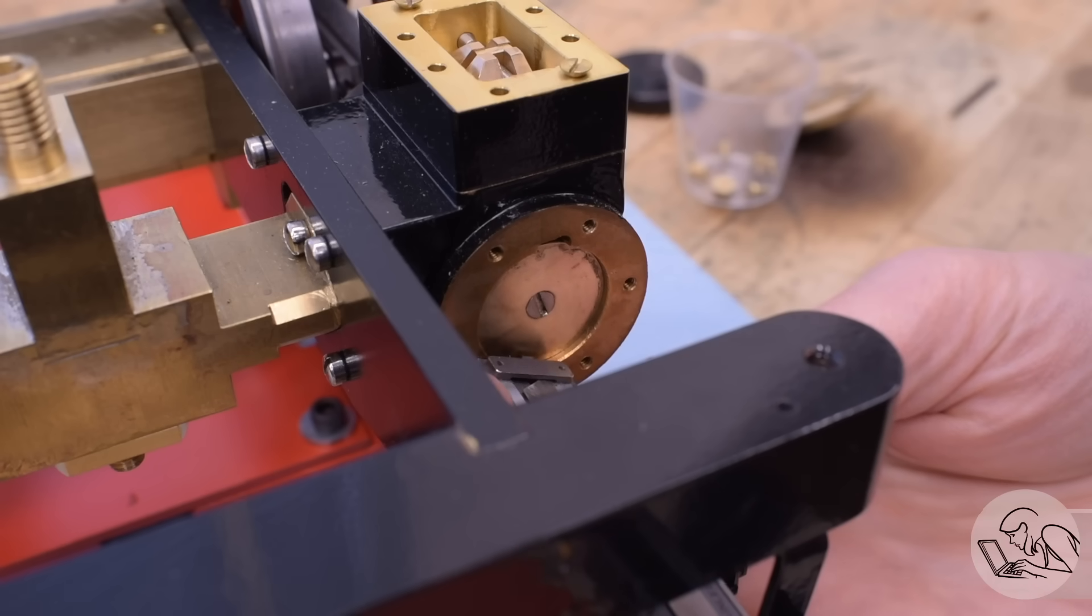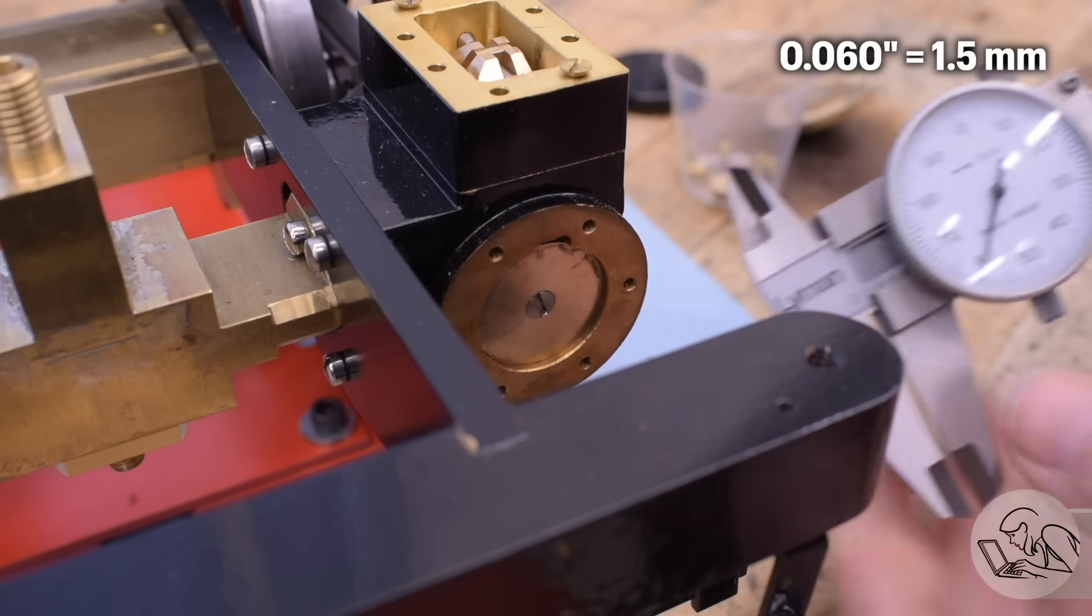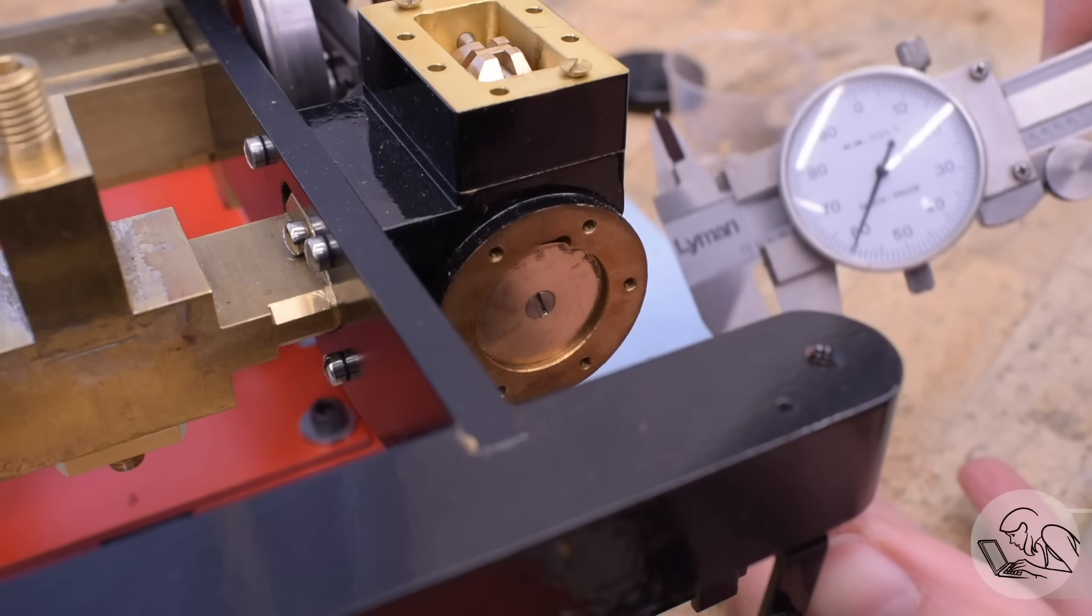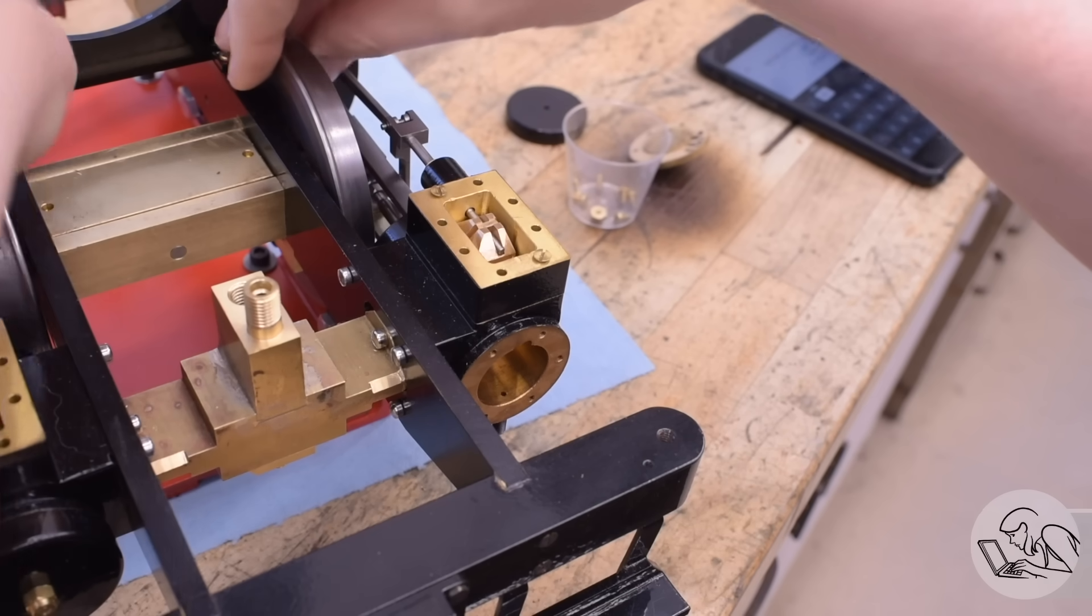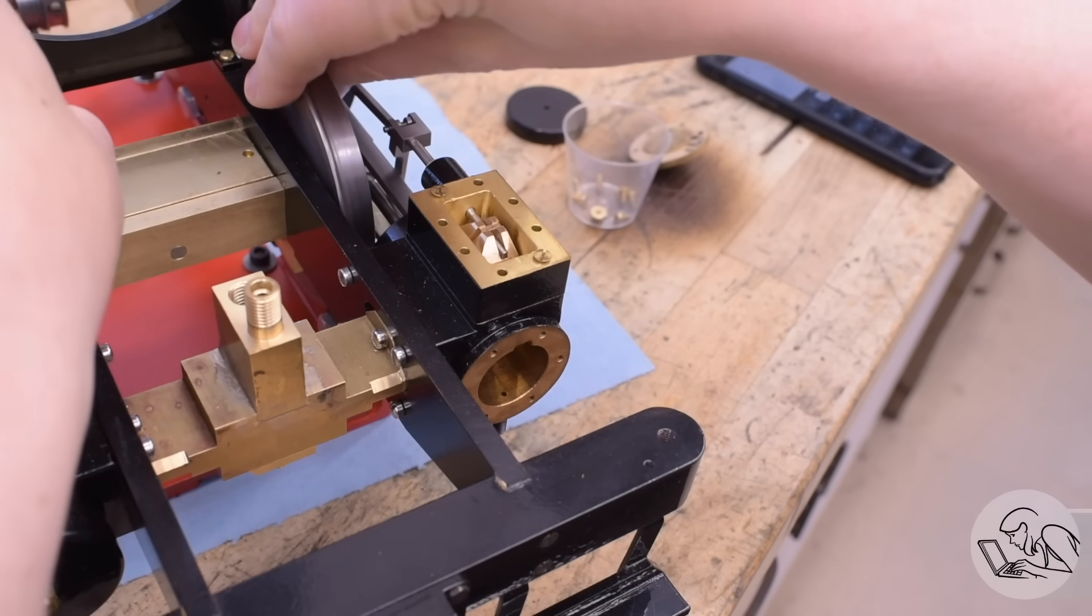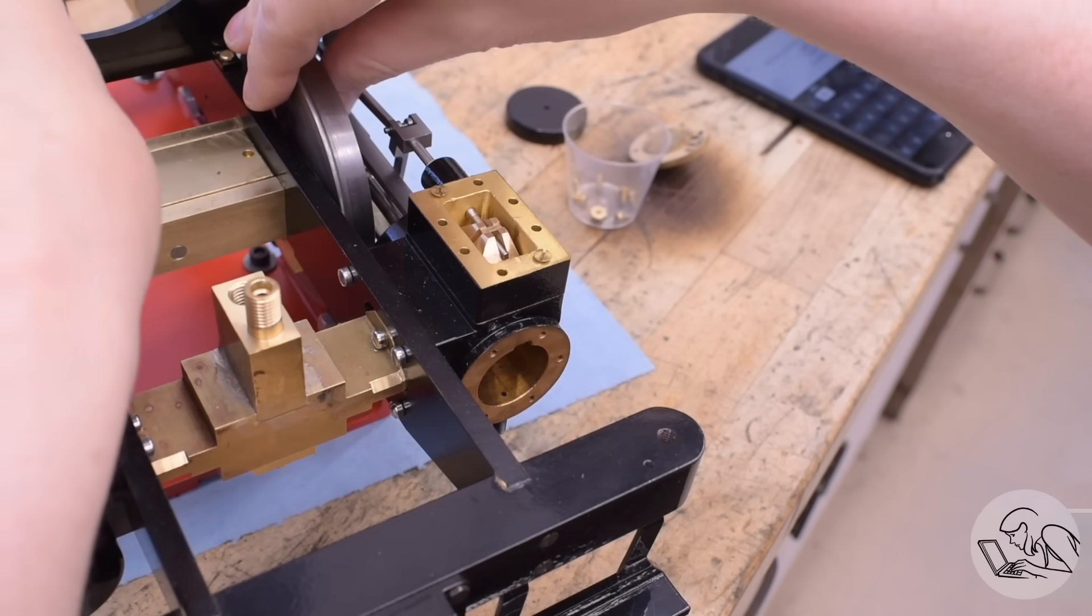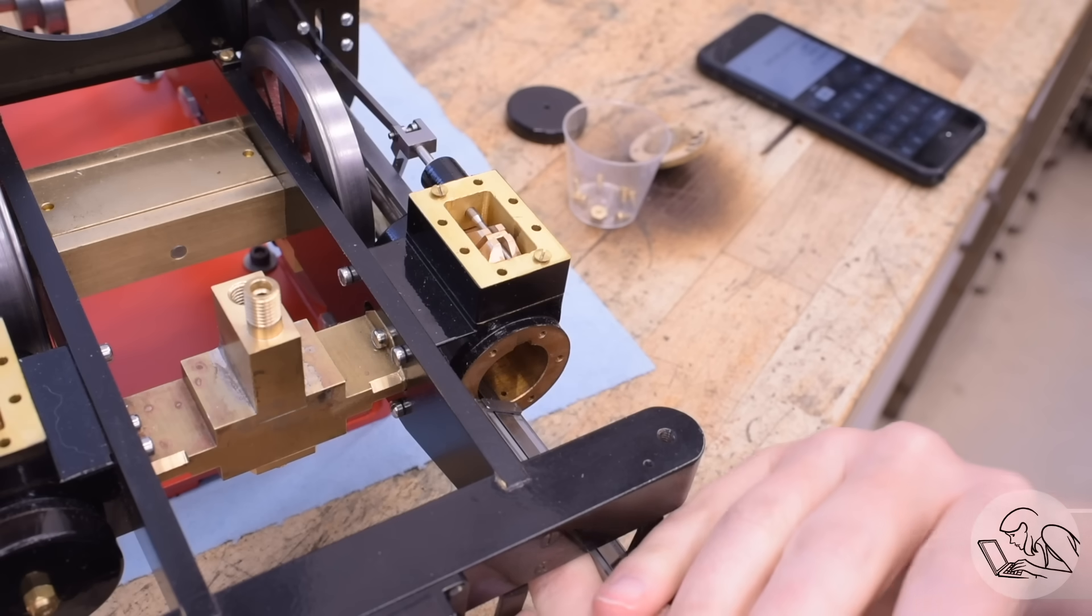Right now the pistons at front dead center are sitting about 60 thousandths shy of the head, and that is definitely not enough head clearance. The goal is to have the same amount of clearance at each end because steam engines are double acting, so there's a power stroke happening at each end on every rotation, and you need the same amount of thermal gas expansion space at each end.